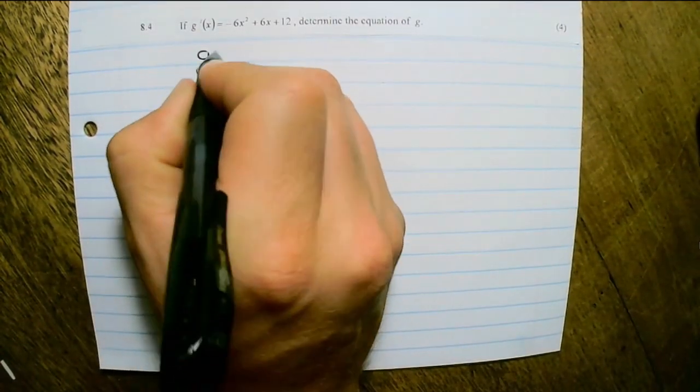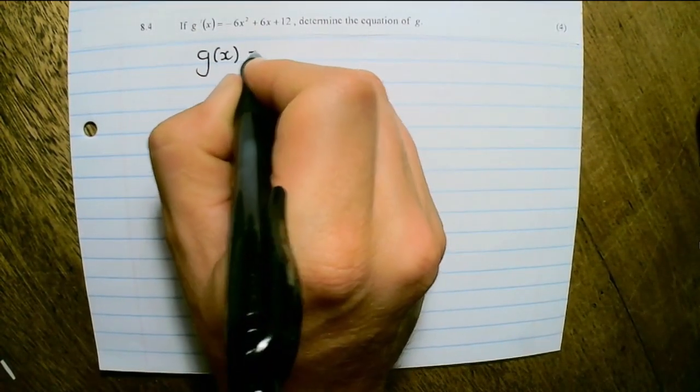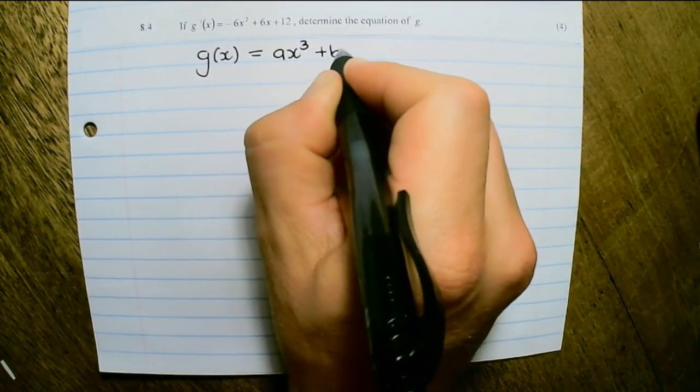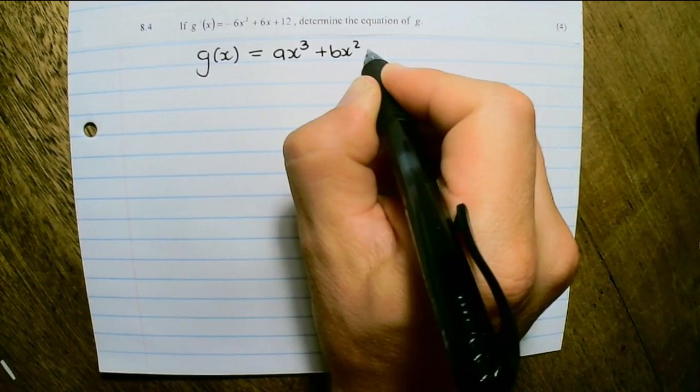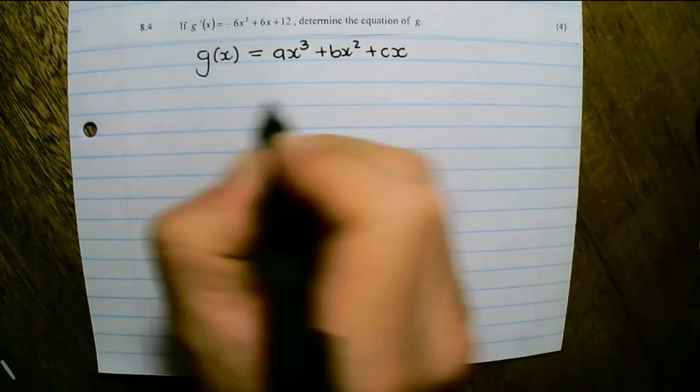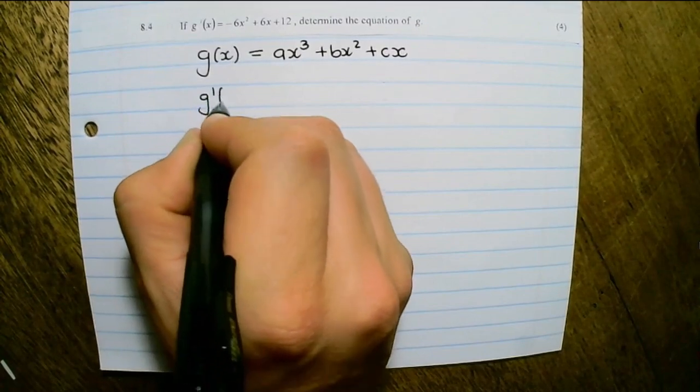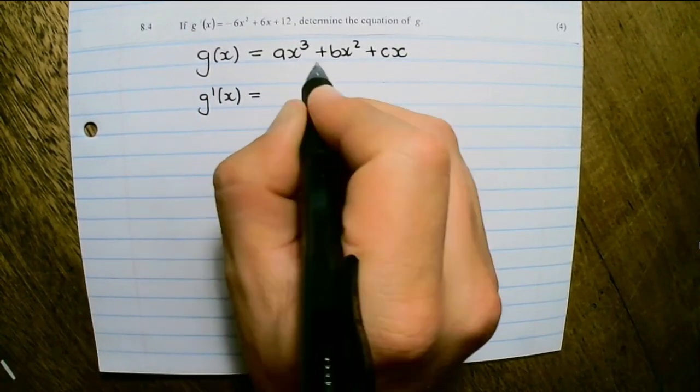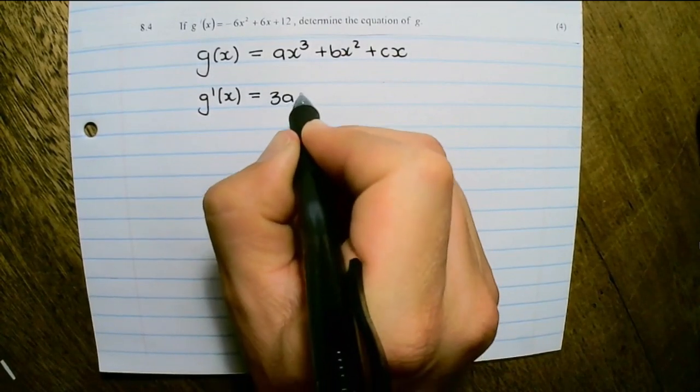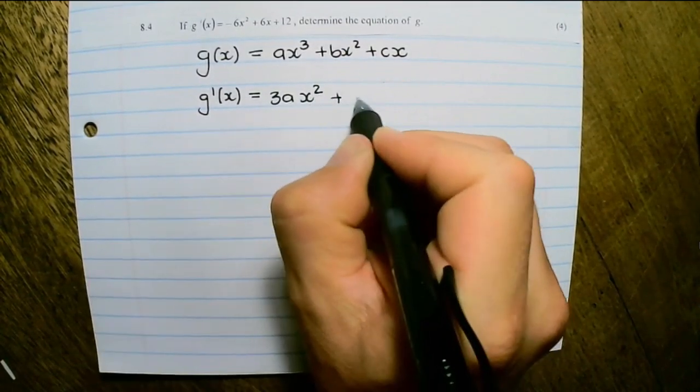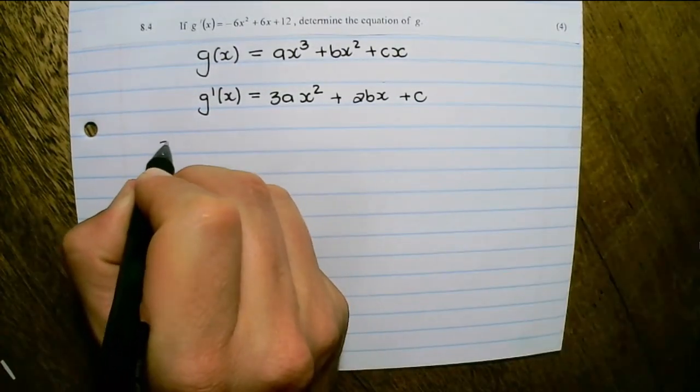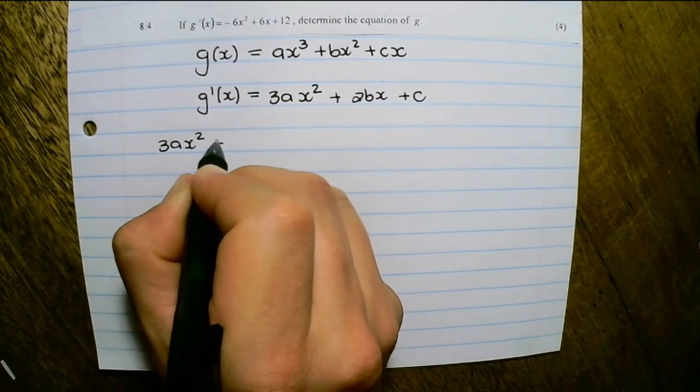Now we were given that g(x) equals ax cubed plus bx squared plus cx. And if I take the first derivative of these values, I would find that I have 3ax squared plus 2bx plus c.